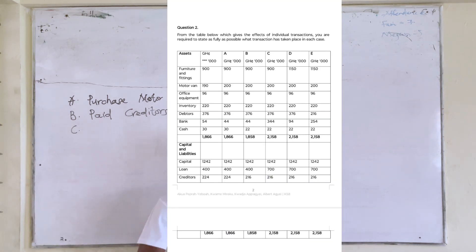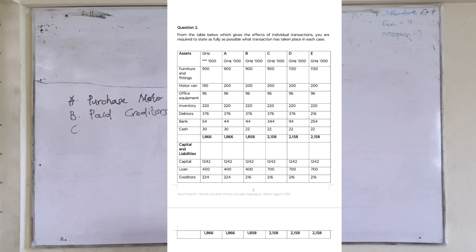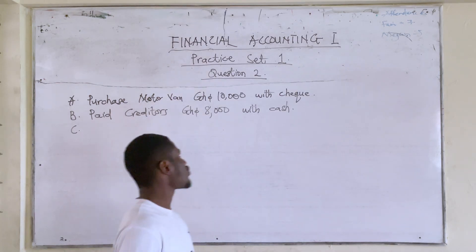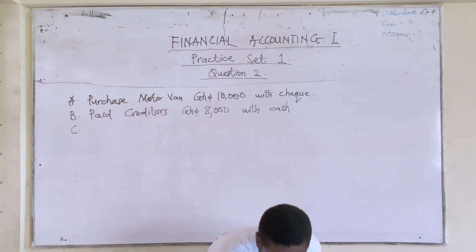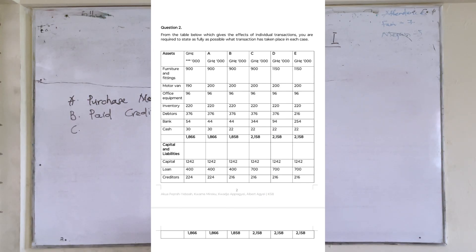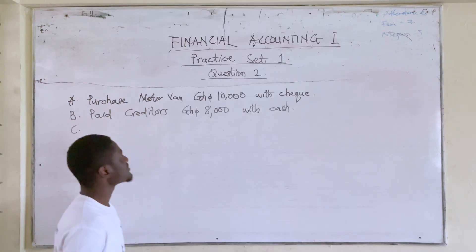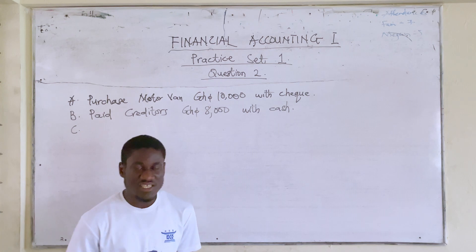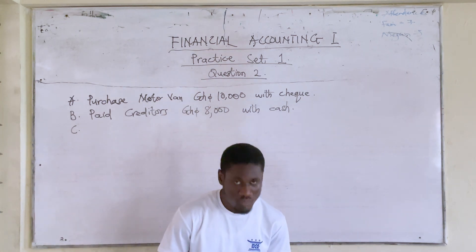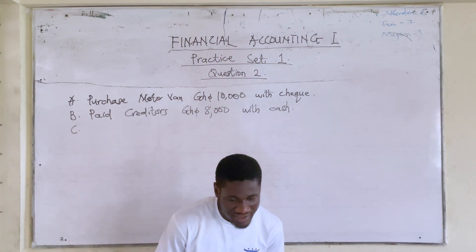Now we move to C, comparing B to C. When we check B to C, everything was intact except bank and loan. Bank and loan both changed by 300,000. So we can say: received loan 300,000 by cheque.